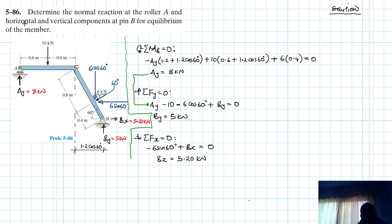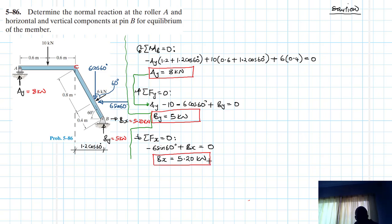Let me outline the final solutions: A_Y = 8 kilonewtons, B_Y = 5 kilonewtons, and B_X = 5.2 kilonewtons. That is really about it. I hope the video was helpful — if it was, give me a thumbs up, keep subscribing and liking my channel. Bye bye and see you in my next screencast.